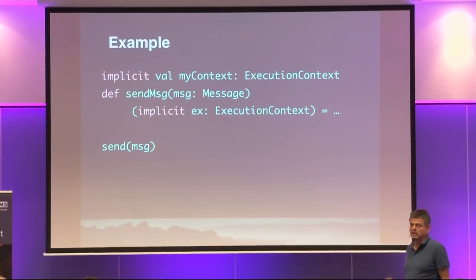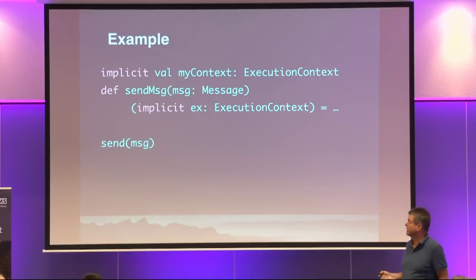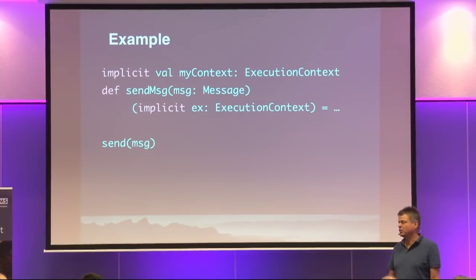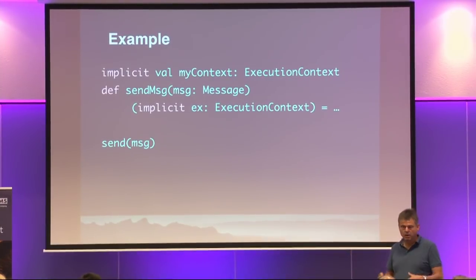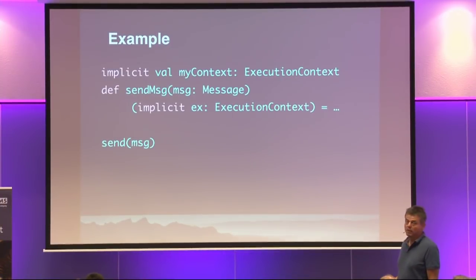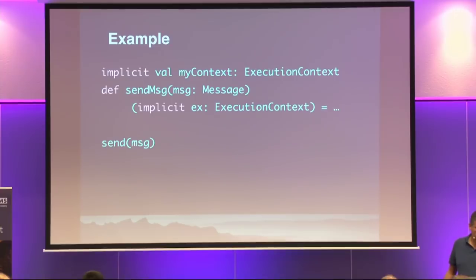Here we have a method send message, and it takes two parameters: a message, and then it takes an execution context, because we assume that we are in a concurrent setting and this thing has to be scheduled. But it's tedious to pass an execution context to everything, because normally it's always the same — so I pick one at the root of my program and that's it. But I don't want to commit to a single one for the whole world, because some people need a different scheduler. So, a typical use case for an implicit parameter. Somewhere — typically not right next to it but maybe with an import — I have an execution context which is marked as an implicit. And then I have an operation send message, and the idea is that send message will be completed by the compiler to send message my context.